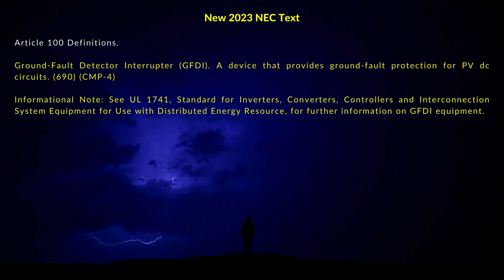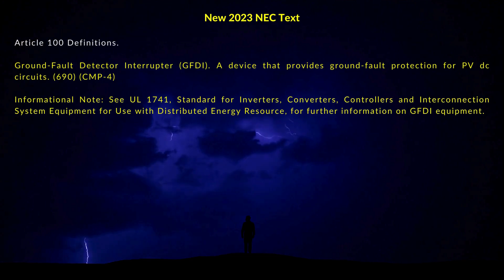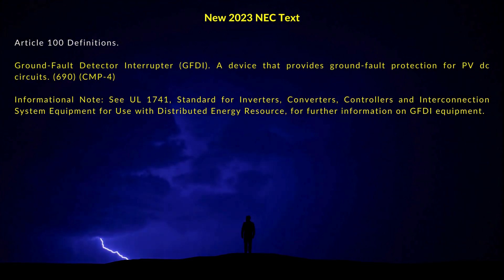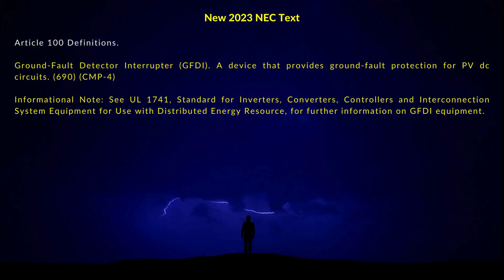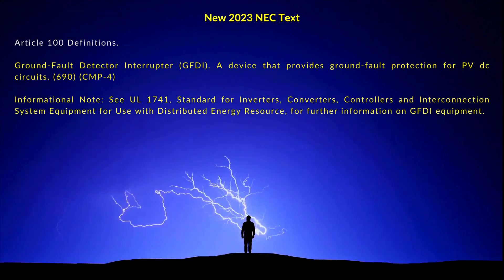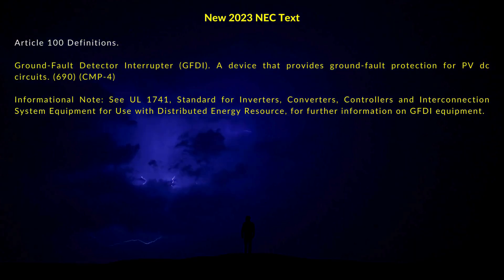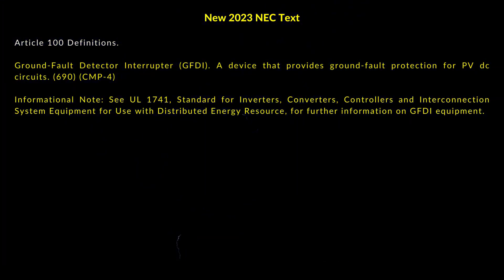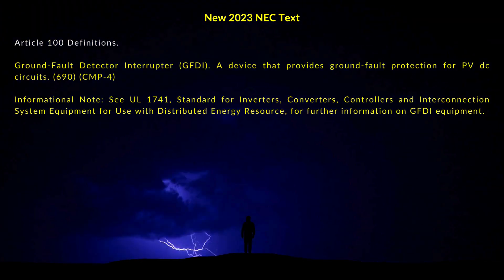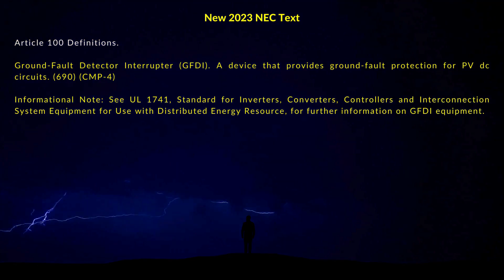The new 2023 NEC text for Ground Fault Detector Interrupter, or GFDI, states that it is a device that provides Ground Fault Protection for PV DC Circuits. The informational note states that UL 1741, Standard for Inverters, Converters, Controllers, and Interconnection System Equipment for Use with Distributed Energy Resources, provides further information on GFDI equipment.